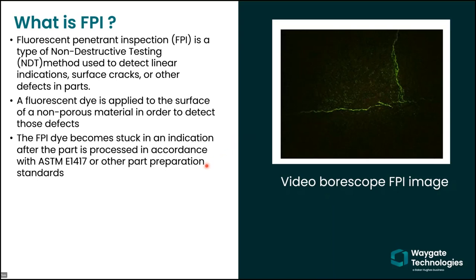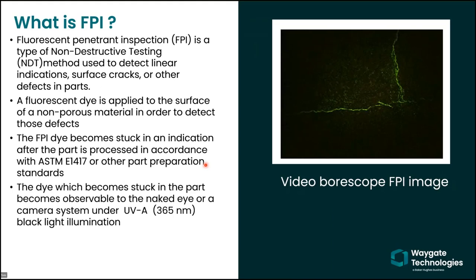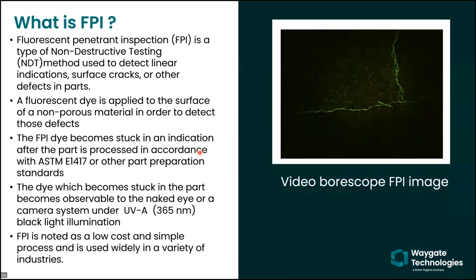ASTM E1417 tells you how to prepare the surface for FPI inspection — spraying the fluorescent penetrant material on, letting it dwell for a certain time, how to clean it up, and potentially using a secondary developer to bring the fluorescent penetrant dye to the surface. After cleaning, if you introduce UVA light — traditionally a handheld illuminator or an entire black light room — the dye penetrant stuck in the defect will glow as shown here.